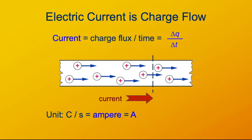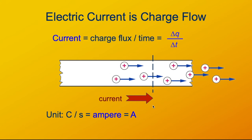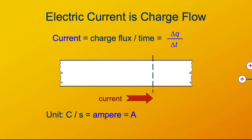Electric current is the flow of charge. It's defined as the charge flux per time. By charge flux, I mean how much charge goes past a point or through a cross section of the wire — the conductor that the current is flowing through. So it's the amount of charge per time. The unit of current is charge per time, so coulombs per second. That's an important enough unit that it has its own name: the ampere. The symbol for ampere is the capital A.